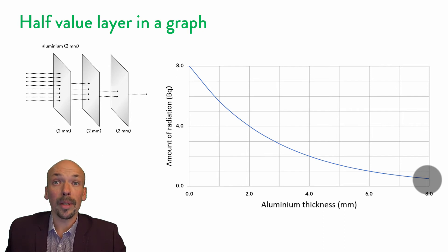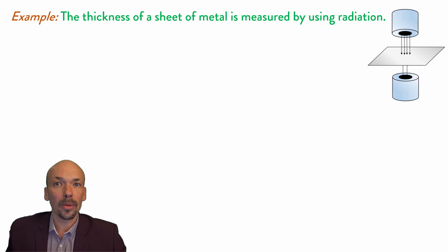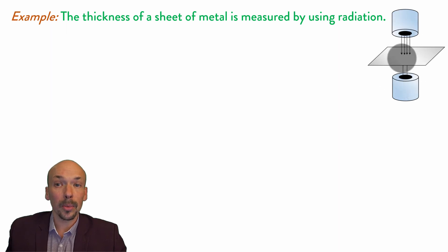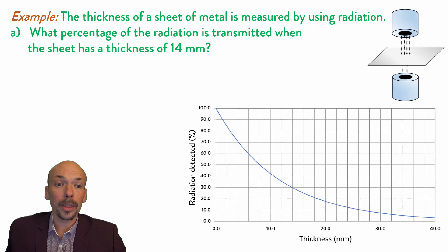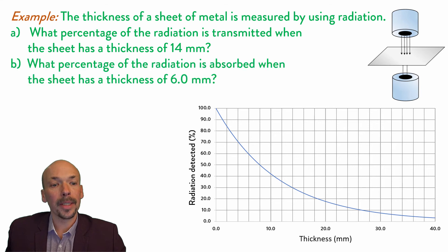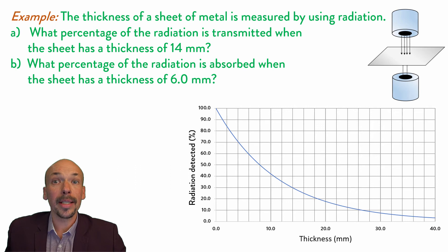There will now be two example questions to check if you understood. The thickness of a sheet of metal is measured by using radiation. We have a radioactive source and a sensor, and with this we can measure the thickness of an aluminium sheet. Here is a graph corresponding to it. The first question: what percentage of radiation is transmitted when the sheet has a thickness of 14 mm? The second question: what percentage of radiation is absorbed when the sheet has a thickness of 6 mm?